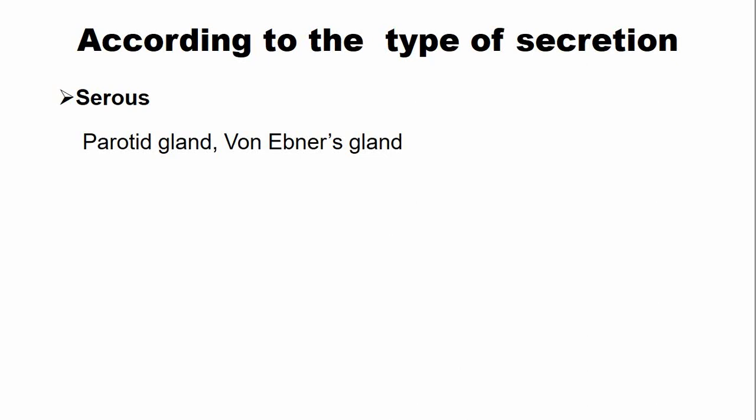Serous saliva is produced by the parotid gland, which is a major salivary gland. A minor salivary gland also produces serous secretion — that is called the Von Ebner glands. The second type of secretion is the mucus secretion, which is rich in a protein known as mucin.